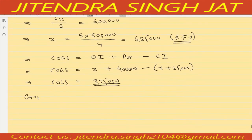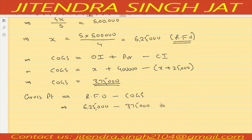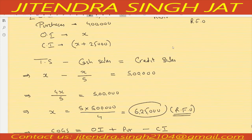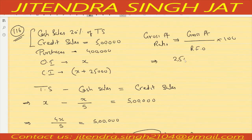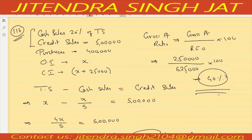Gross profit = Revenue from Operations minus COGS = 6 lakh 25,000 minus 3 lakh 75,000 = 2 lakh 50,000. Gross profit ratio = 2 lakh 50,000 divided by 6 lakh 25,000, multiplied by 100 = 40 percent. So gross profit ratio is 40 percent.